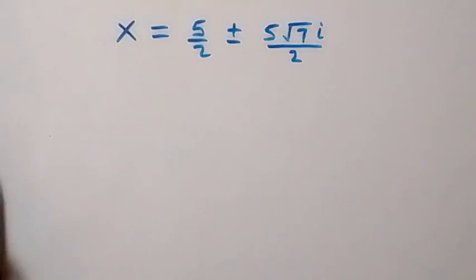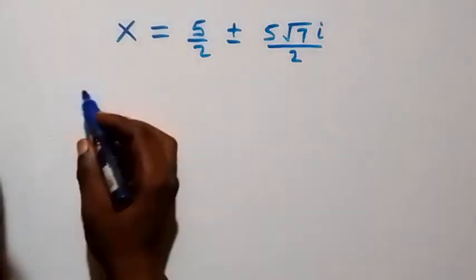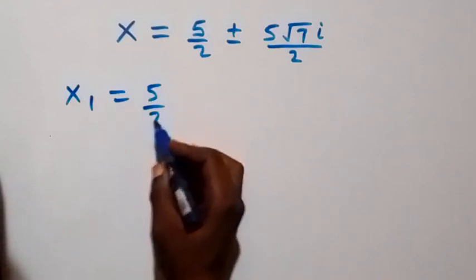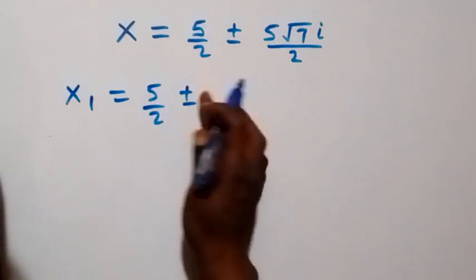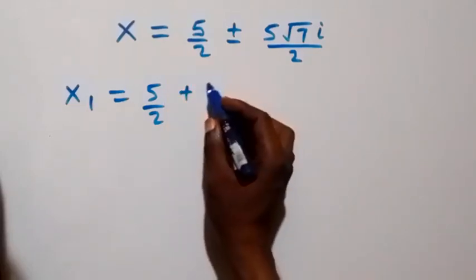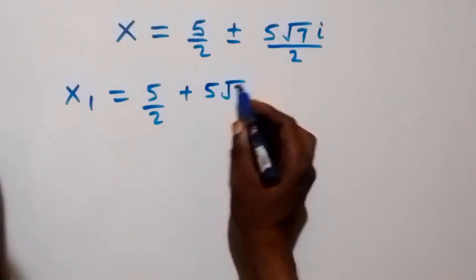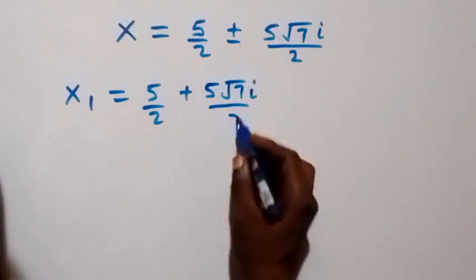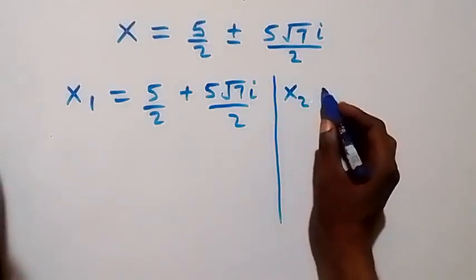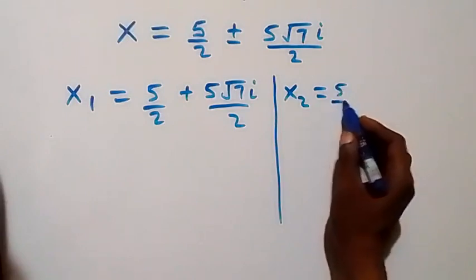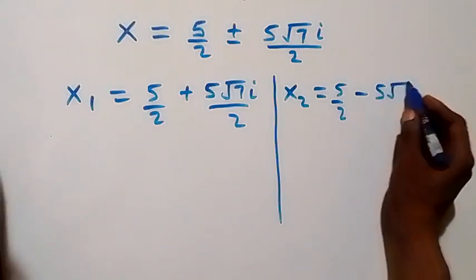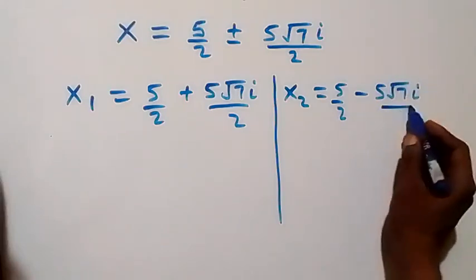So x₁ equals five over two plus five root seven i over two, and x₂ equals five over two minus five root seven i over two.